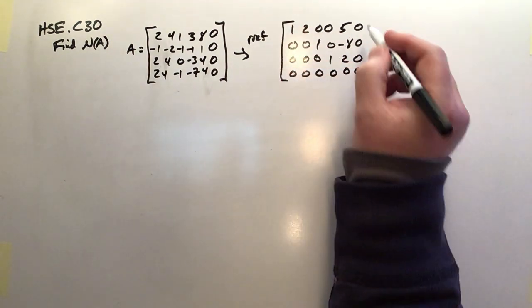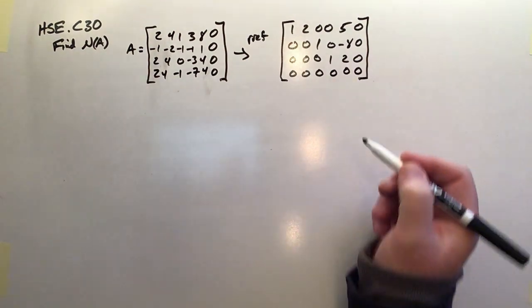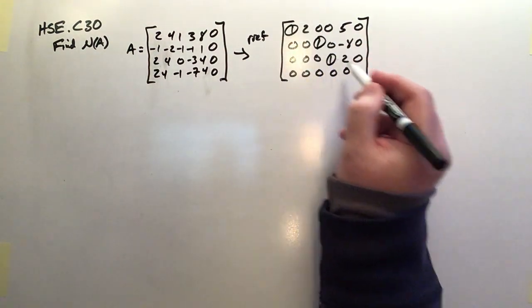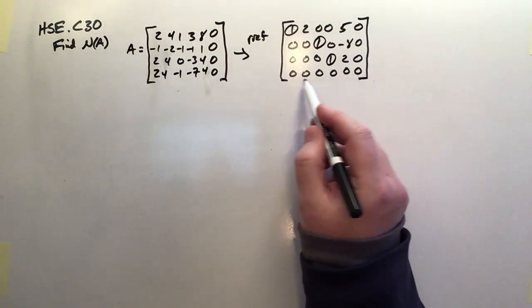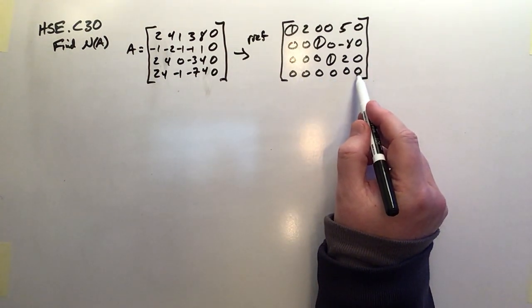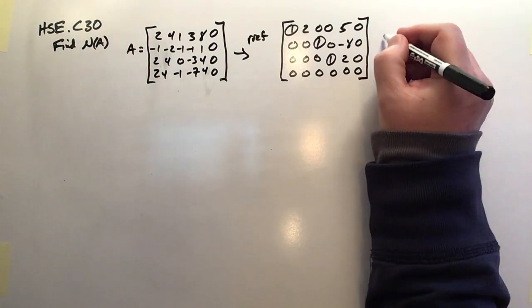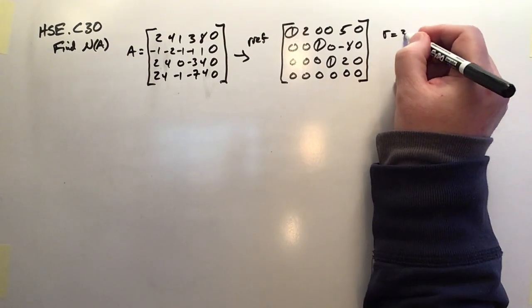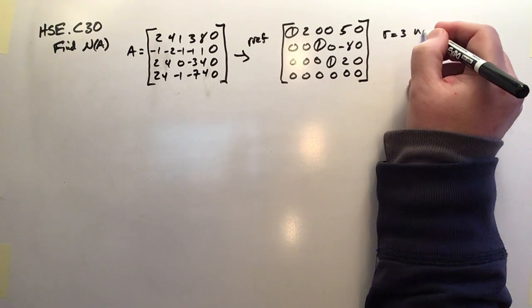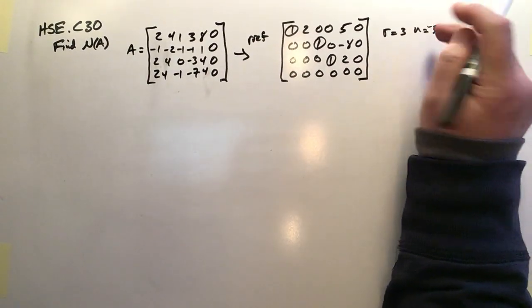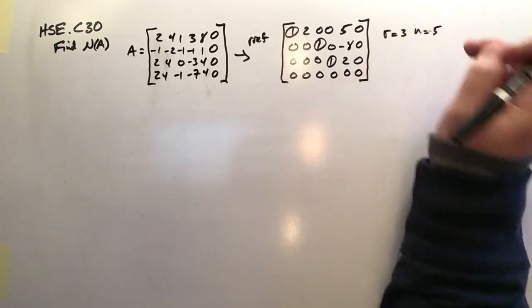So this is the R ref for this particular system. You can see we have 1, 2, 3 pivots, but no pivot in the last column. We do get an equation that sort of opens the door for there to be multiple solutions. So we get R equals 3, N equals 5. So we are definitely going to have multiple solutions here.